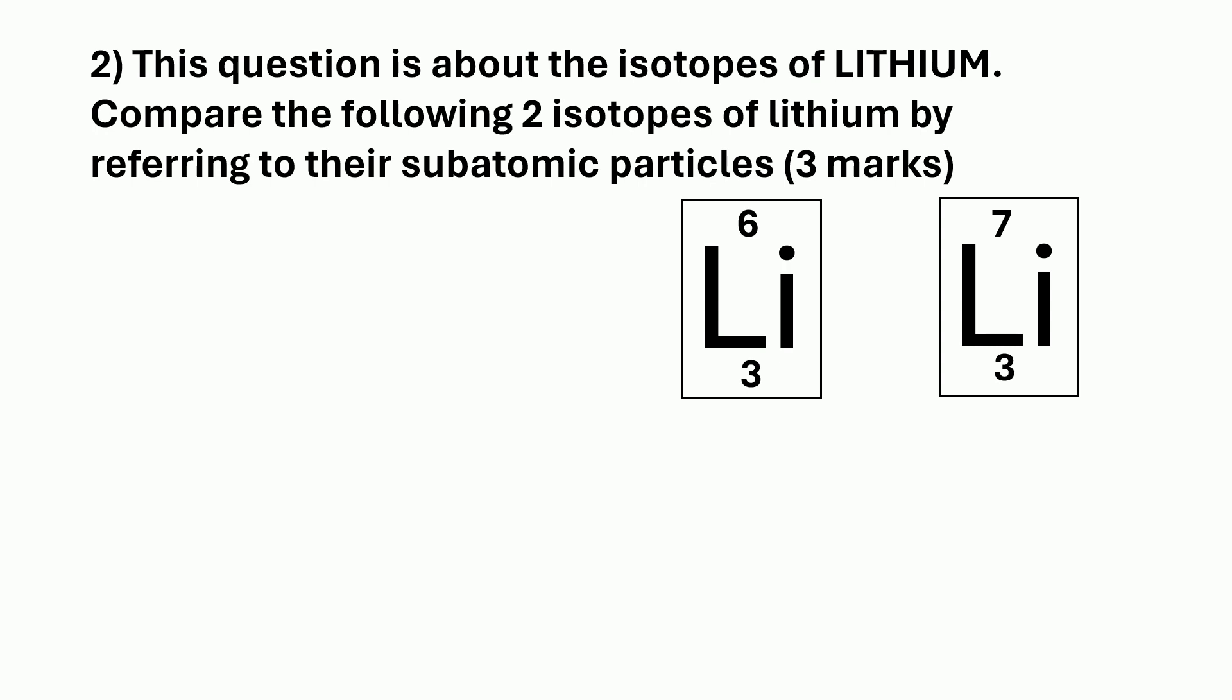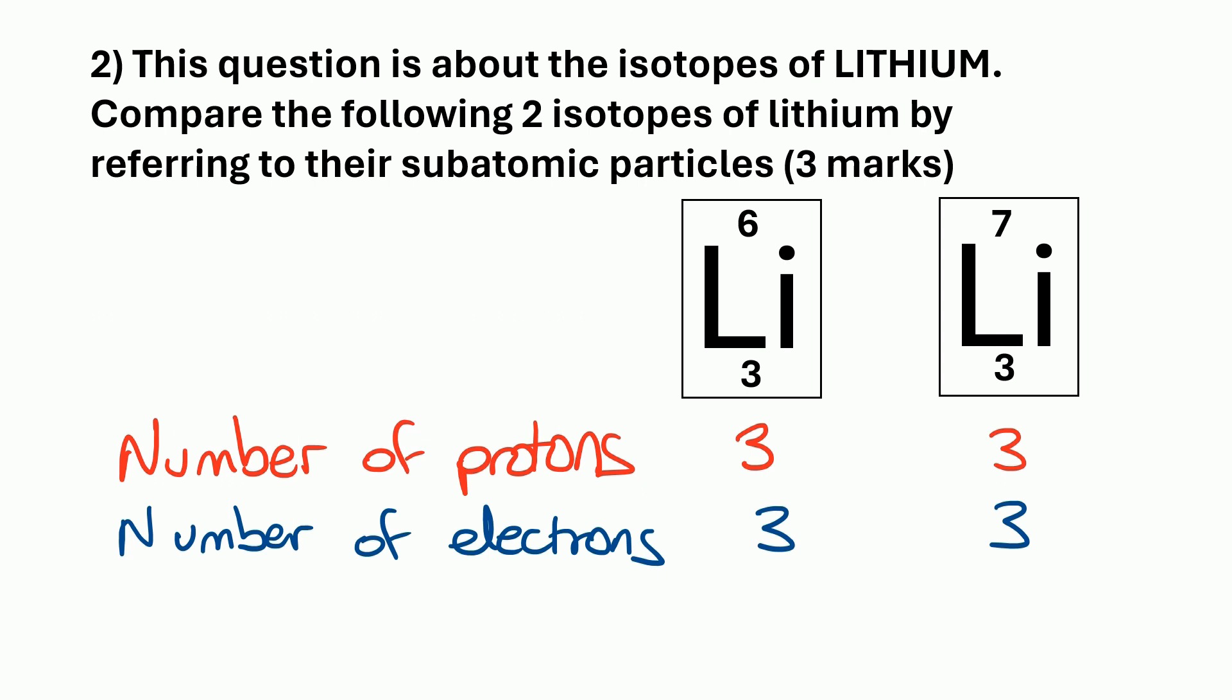Now before we get into the answering of this question, I always say to my students, to make the question a lot easier, write down underneath how many neutrons, protons and electrons are in each isotope. So, first of all, the number of protons, we can see from the atomic number at the bottom that each isotope of lithium has three protons. Similarly, that also tells us the number of electrons. So each of these isotopes has three electrons.